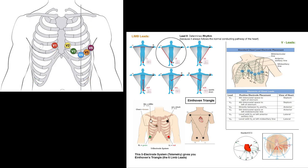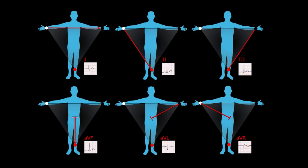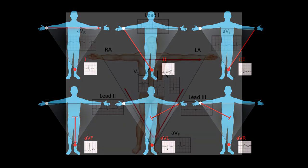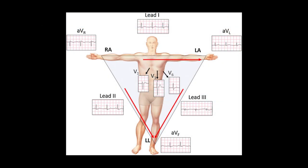The twelve lead configuration uses all ten electrodes — right arm, left arm, right leg, left leg, and V1 through V6 — and there are two augmented leads, giving you twelve leads in total. More electrodes on a patient give medical providers options for viewing different electrical cross-sections of the heart, which greatly assists with diagnosis.